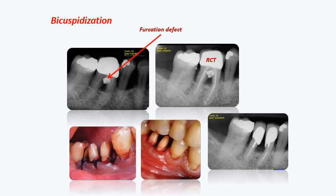As we can see, these two roots are well separated from each other. Because of the large furcation defect, they are separated and made into two premolars by bicuspidization.